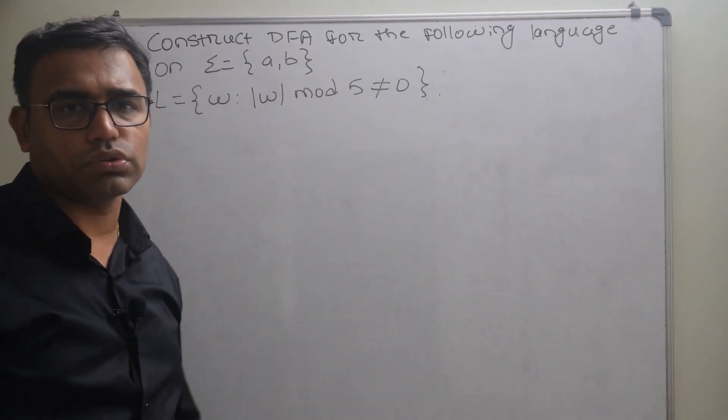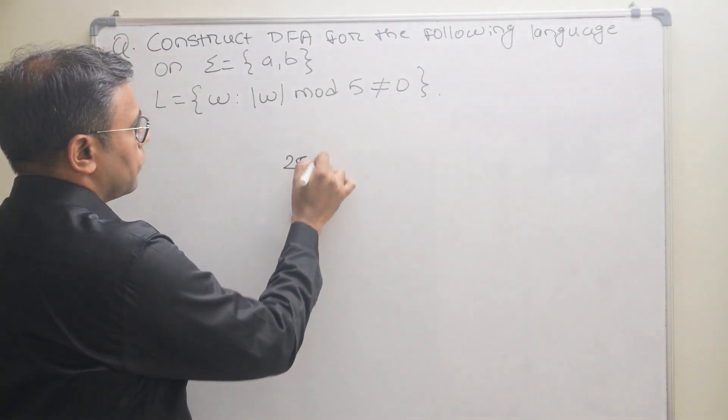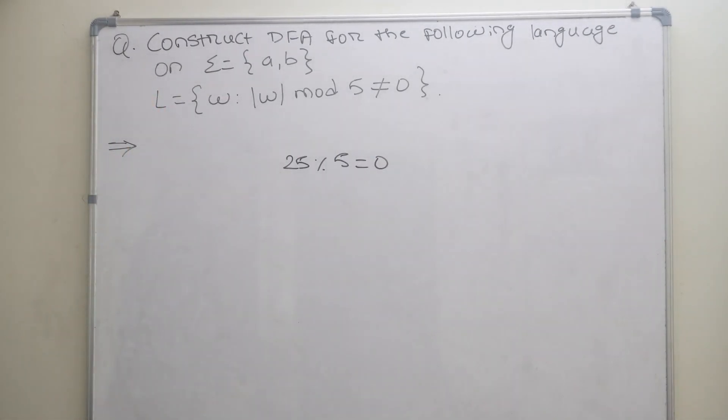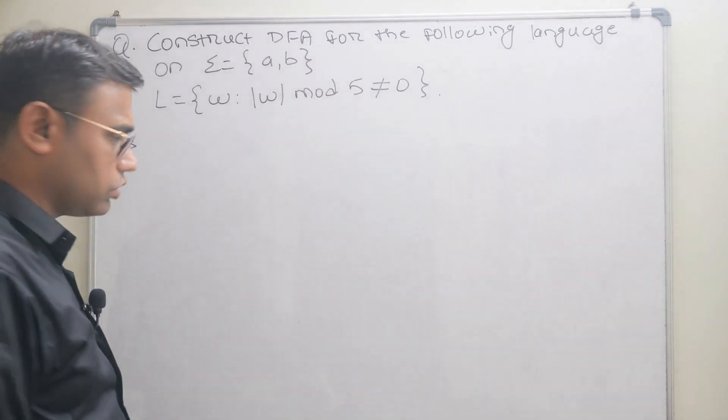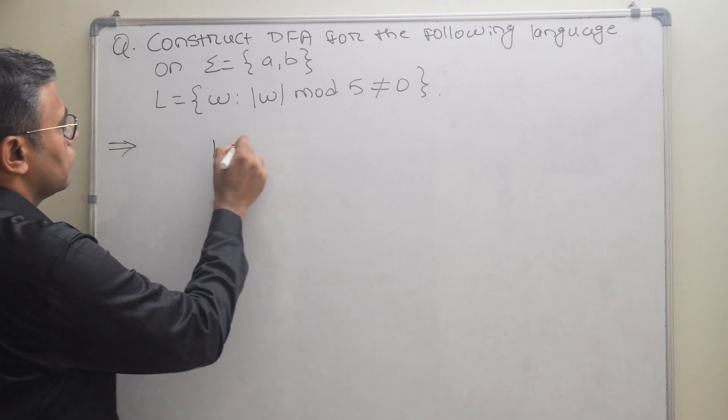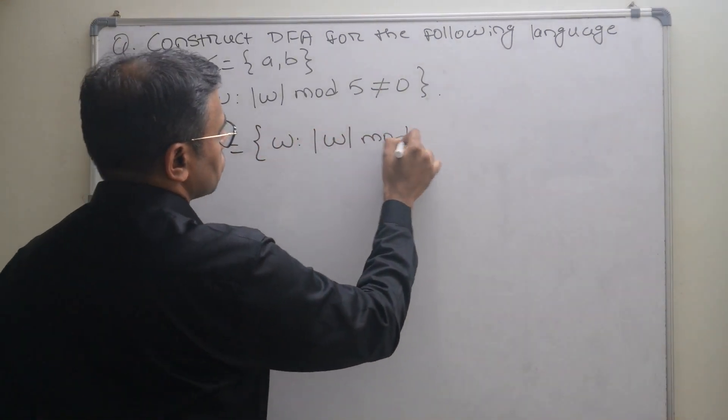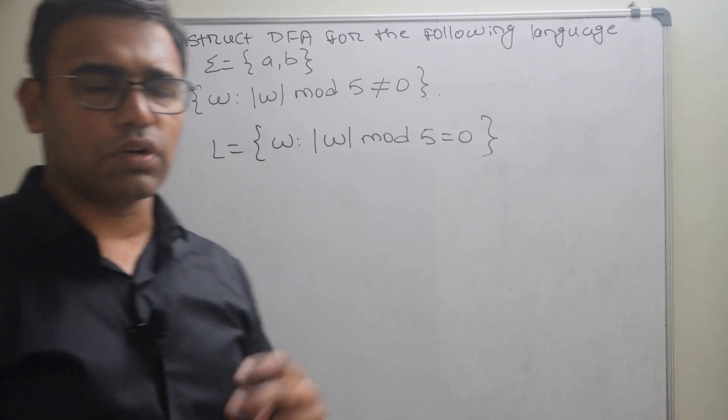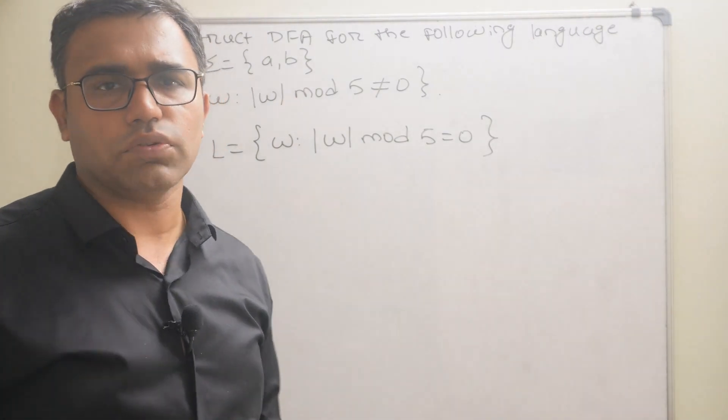This means |w| mod 5 should not equal 0. For example, if we take 25, then 25 mod 5 equals 0, so it should not be equal to 0. First, we will find |w| mod 5 equal to 0, and then we will construct the automata for this language L = {w | |w| mod 5 = 0}. After constructing this, we will convert final states into non-final states and non-final states into final states to get the answer.